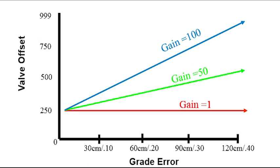This graph shows how gains affect hydraulic performance. Gains act as a multiplier to valve offsets. The higher the gain, the higher the valve output as grade error increases.